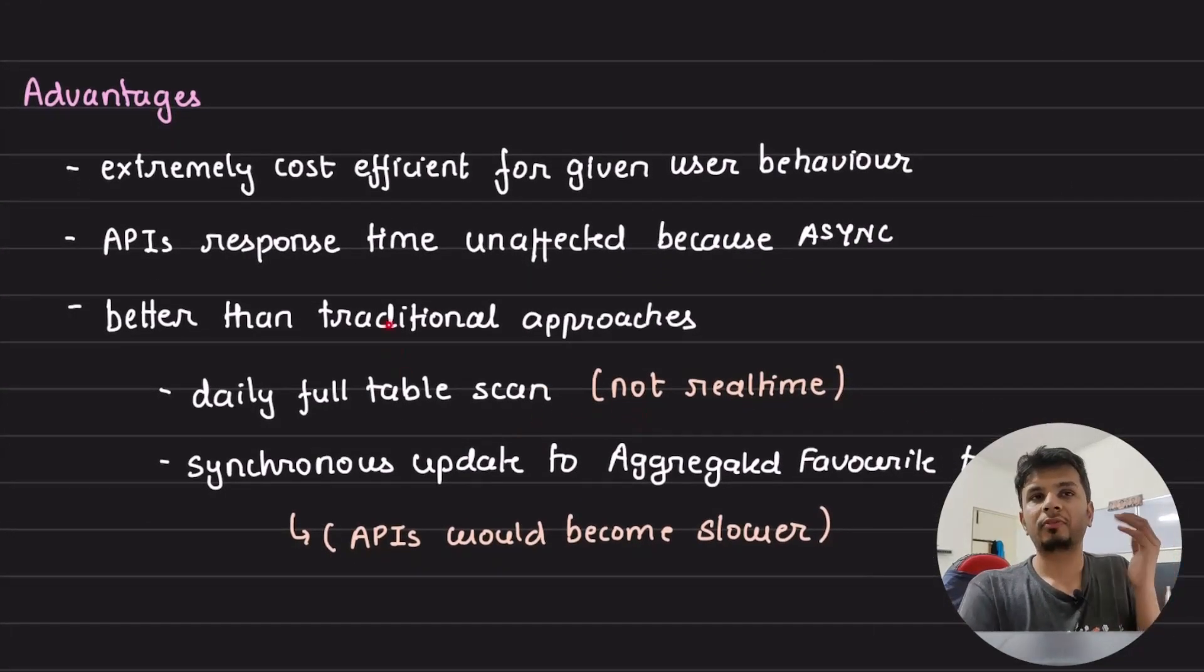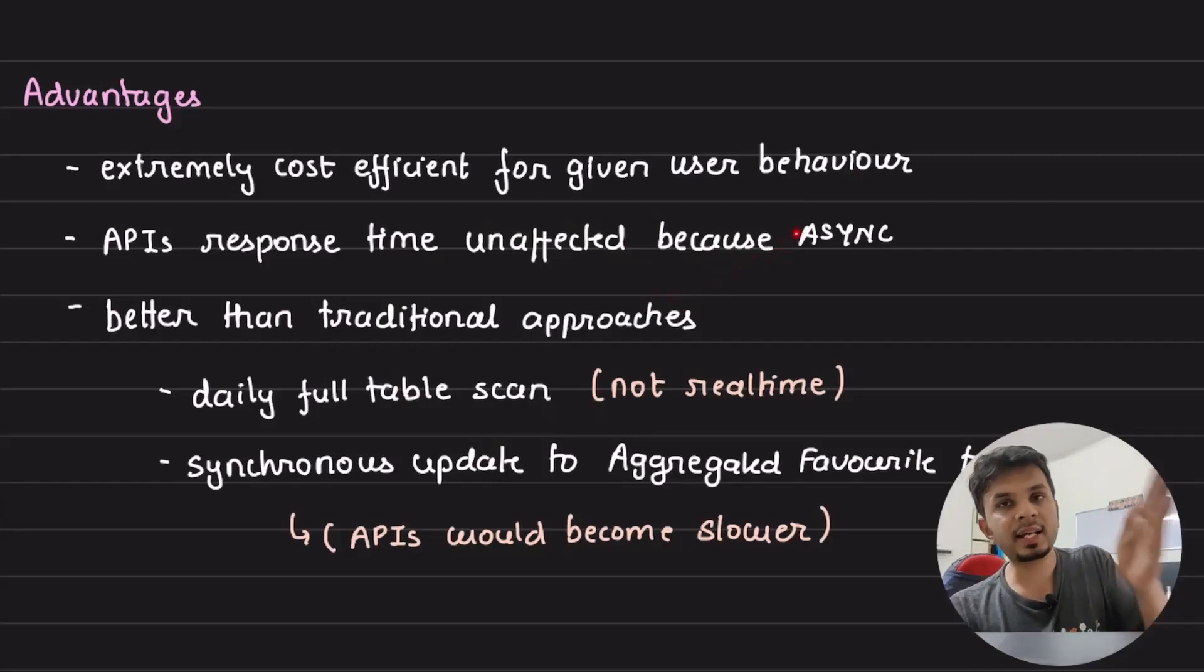Advantages of this architecture: First of all, it's extremely cost efficient. We just saw how much it would cost, just a dollar a month extra, nothing more than that. It is extremely cost efficient for a given user behavior. You cannot just use it for social networks. You have to use it for use cases where it makes sense. Here, marking some restaurant as favorite and removing it from favorite is not very common, it will be an obscure event. So that's why you can use serverless for that. Second, API response time remains unaffected given that our entire flow is asynchronous. You just saw how our API server creates an entry or removes an entry from the DynamoDB, but our DynamoDB stream is unaffected. That is totally asynchronous behavior managed by AWS. So our API response times are not getting affected at all.